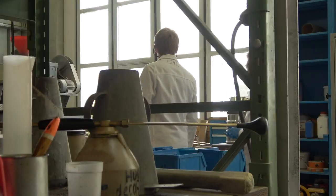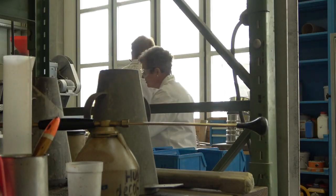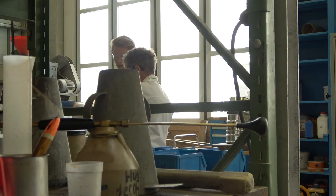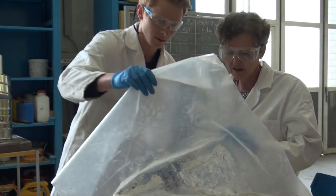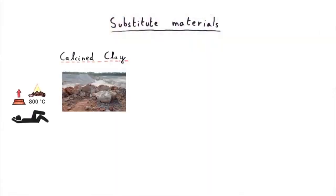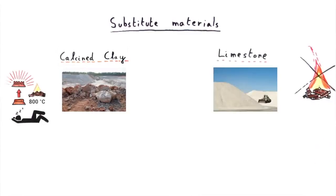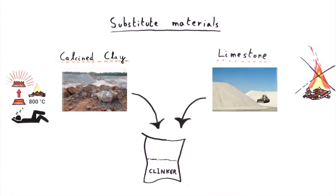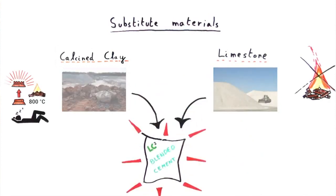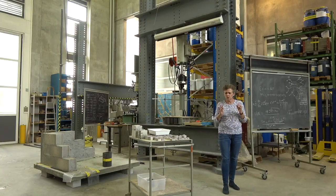We realize that we can take clays, we can calcine them — that's to say we heat them to about 800 degrees, much lower temperature than to produce Portland cement — and then when we make a combination of these calcined clays with limestone, which is a material with almost no CO2 emissions, we can get very high levels of substitution. This combination of calcined clay, limestone and cement we call LC3.